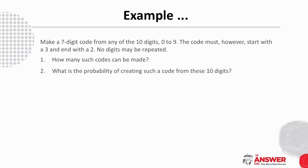Let's look at an example that includes conditions on how the code needs to be, and also finding the probability of these conditions. Make a seven-digit code from any of the ten digits, nought to nine. The code must start with a three and end with a two, and no digits may be repeated. We need to find how many such codes can be made, and what is the probability of creating such a code. Pause the video here if you would like to give this a go first.